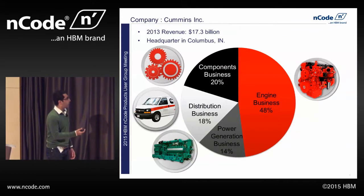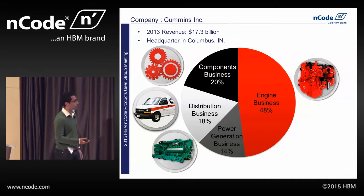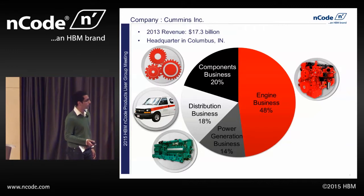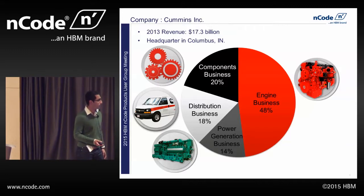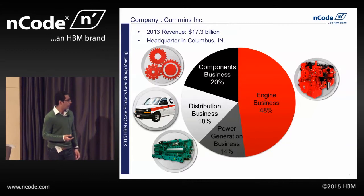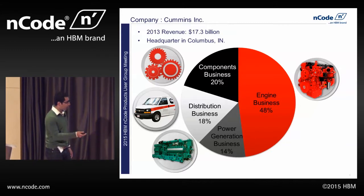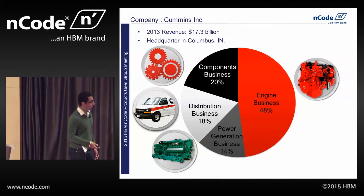A short description of what Cummins is as a company: Cummins is headquartered in Columbus, Indiana. It has four different business units. The first is the components business, the second is distribution. The engine business is in Columbus, Indiana. Majority of our business is diesel engines, and a smaller part is the power generation unit, which I'm part of. The percentage shown is essentially the contribution in revenue. As far as I'm concerned, we work at the power generation business, which is headquartered in Minneapolis, Minnesota.